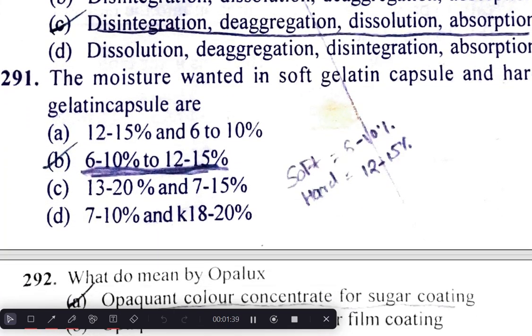The moisture content required in soft gelatin capsules and hard gelatin capsules are 6–10% and 12–15%, respectively.